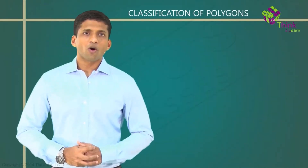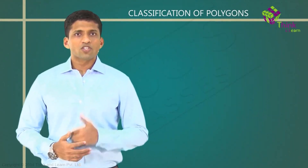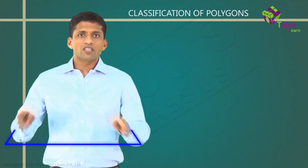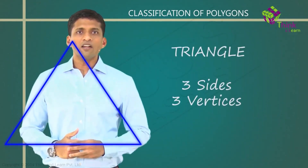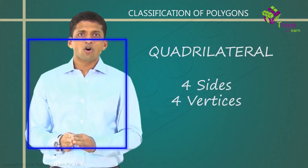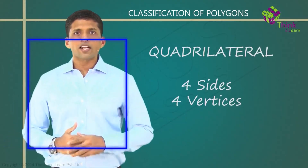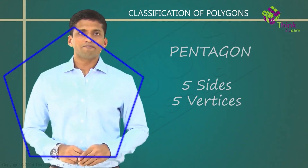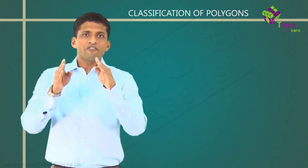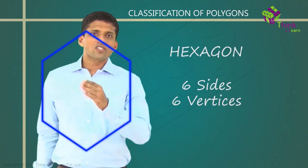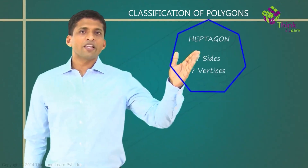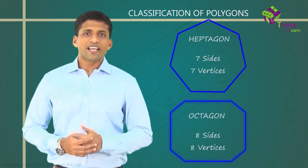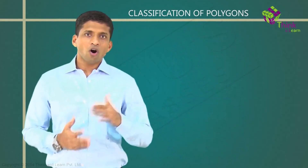Now we will see classification of polygons. Based on the number of sides or vertices, polygons are named as follows: three sides — triangle; four sides — quadrilateral; five sides — pentagon; six sides — hexagon; seven sides — heptagon; eight sides — octagon. Polygons can be named based on their number of sides or vertices.